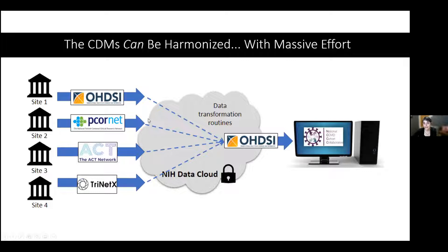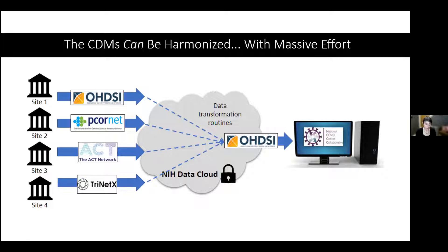It wasn't until we got started that I had a recognition of how much person power was required to do that harmonization — I'm talking thousands of hours of people spending all day mapping value sets to each other, verifying mappings, running unit tests, before we felt like we had a decent harmonization between the four data models. Even today, N3C is an absolutely excellent resource, but I still can't say that all four data models are truly harmonized. You can still see the differences between the source data models in the N3C data, even when harmonized.